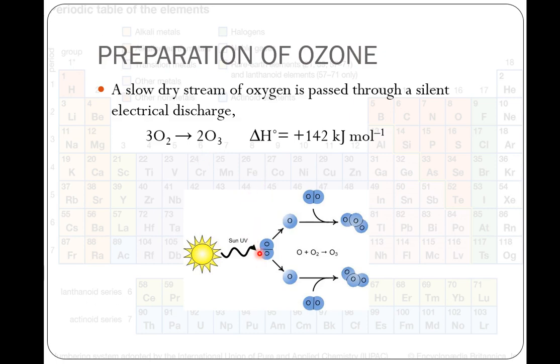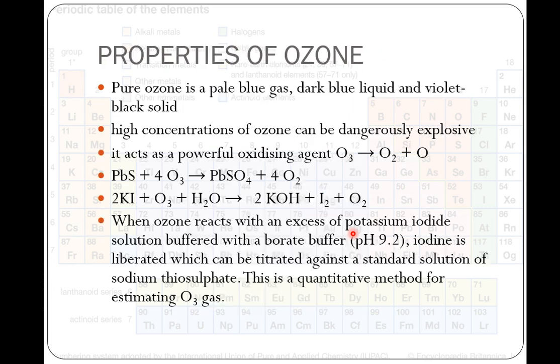Here you can see in the atmosphere, UV lights from the sun. This is an oxygen molecule. Oxygen molecule breaks into nascent oxygens. These nascent oxygen atoms combine with oxygen molecule to form ozone. This is how ozone is formed in the atmosphere.